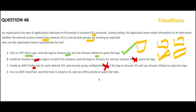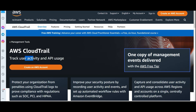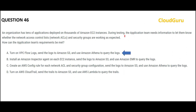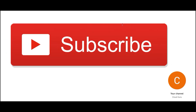Option D says use CloudTrail, send trails to S3, and use Lambda to query them. Nobody uses Lambda to query trails — you should use Athena. Also, CloudTrail is used to track user activity and API usage — the question is about tracking network ACLs and security groups, not user activity. So option D is also wrong, and option A — VPC Flow Logs with S3 and Athena — is the final answer.